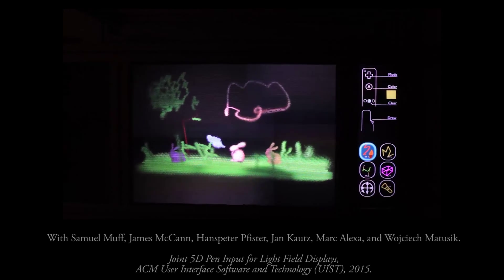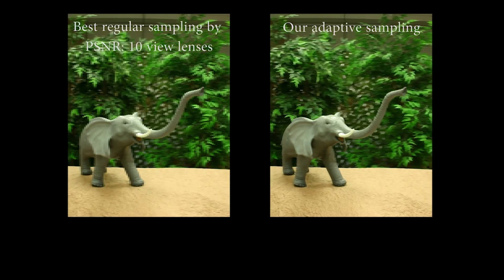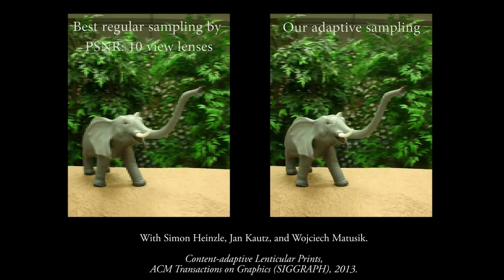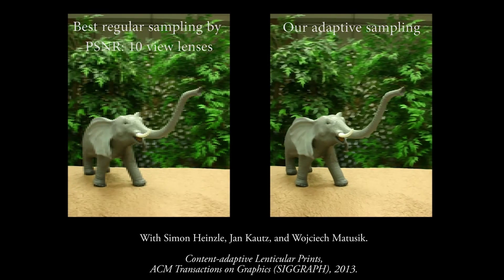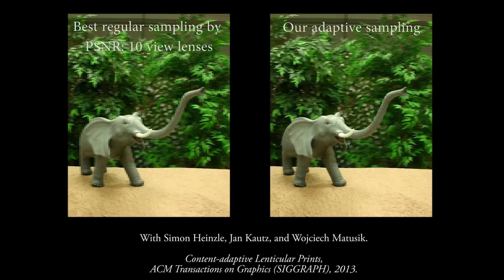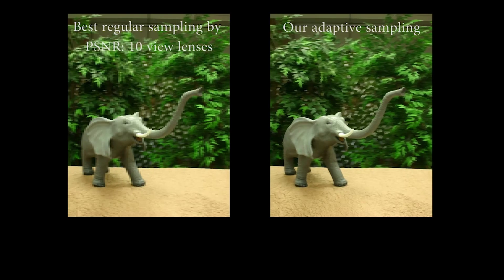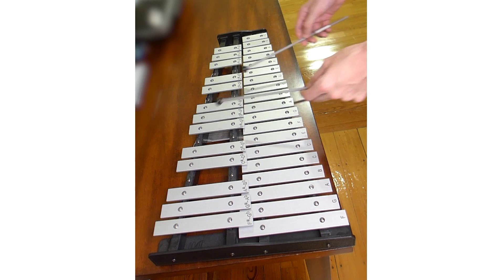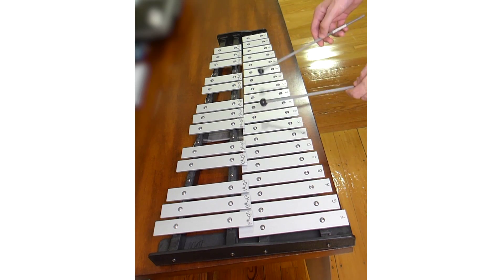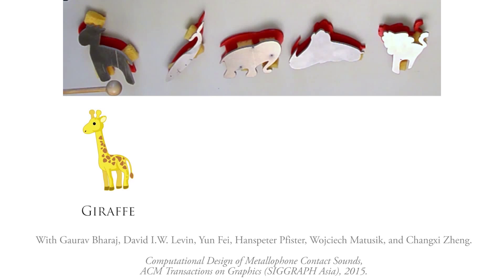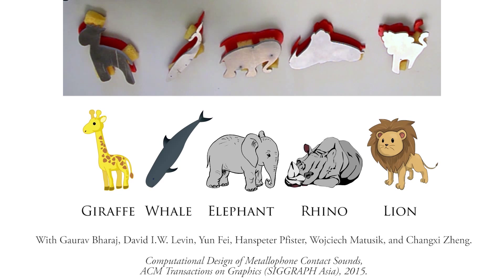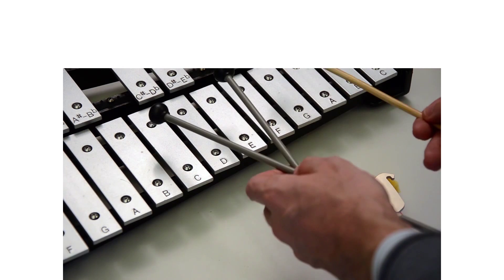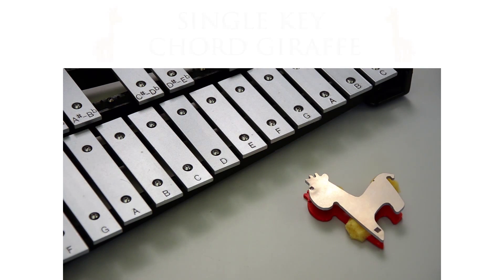I've also looked at how computation can help solve design problems. For instance, to drastically increase the resolution of static multi-view displays by tailoring microlenses to content. Or how computation can increase flexibility in musical instrument design, like this glockenspiel made from animal shapes, or even a key which plays a chord from a single strike.